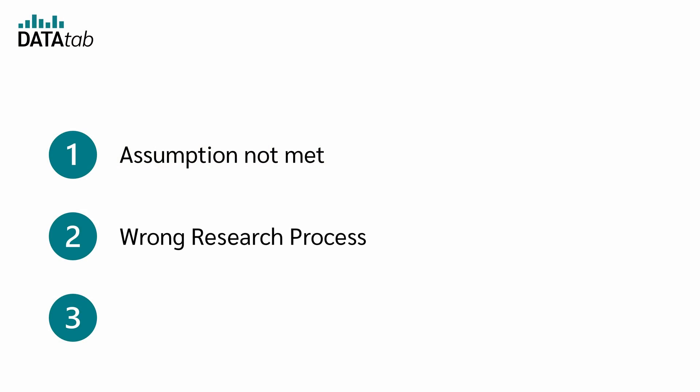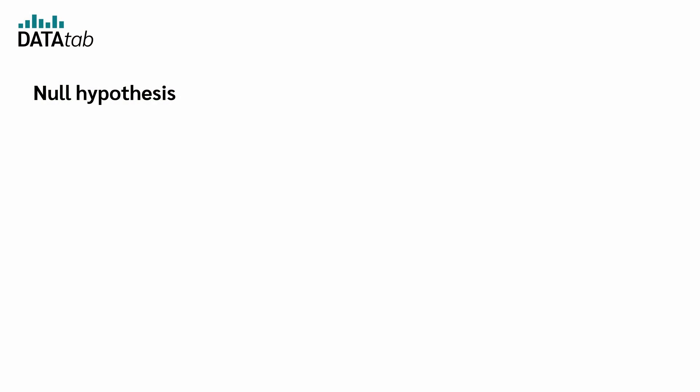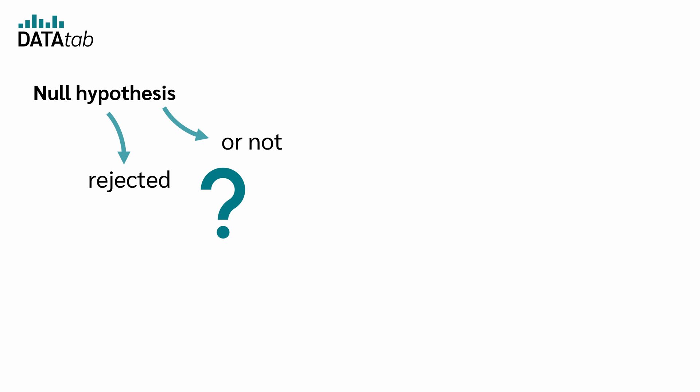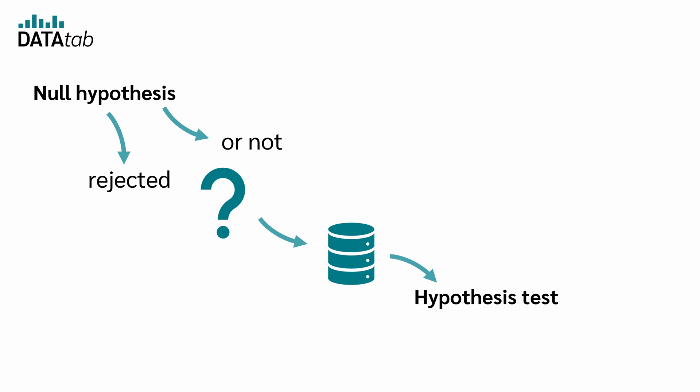Let's move on to point 2. In my opinion, this point is violated the most. Let's call it the wrong research process. Simply put, when you want to test a hypothesis, you start by formulating a null hypothesis. To determine whether you should reject this hypothesis, you collect data and evaluate it using a hypothesis test.